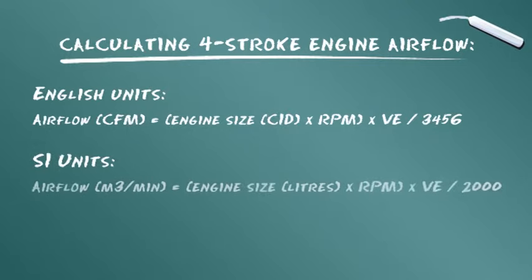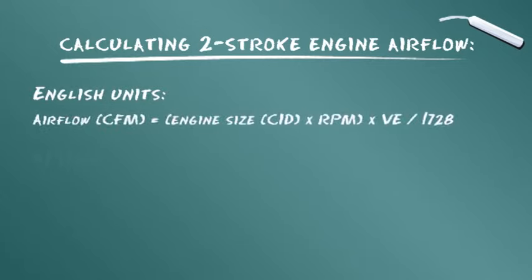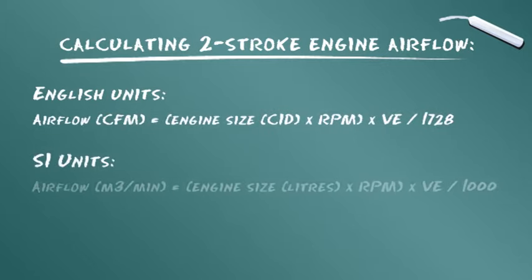Die Formel für die Berechnung des Luftdurchsatzes von Viertaktmotoren wird in englischen Einheiten und mit internationalen SI-Einheiten dargestellt. Etwas weiter in diesem Modul stellen wir Ihnen eine Tabelle zur Verfügung, anhand der Sie einen Wert für den VE, den volumetrischen Wirkungsgrad, auswählen können. Auch Zweitakt-Dieselmotoren in englischen Einheiten oder SI-Einheiten werden mit einem Wert für den volumetrischen Wirkungsgrad multipliziert.